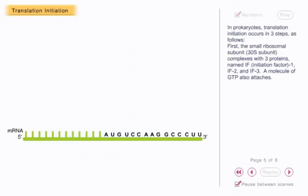In prokaryotes, translation initiation occurs in three steps. First, the small ribosomal subunit, 30S subunit, complexes with three proteins named initiation factor 1, initiation factor 2, and initiation factor 3. A molecule of GTP also attaches.